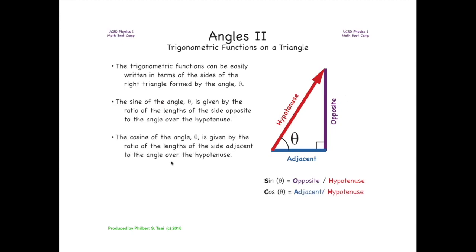In this way the sine of the angle is given by the ratio of the opposite over the hypotenuse. The tangent of the angle is given by the ratio of the opposite over the adjacent.